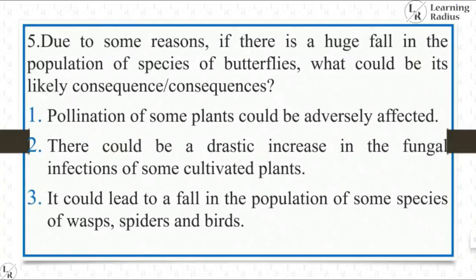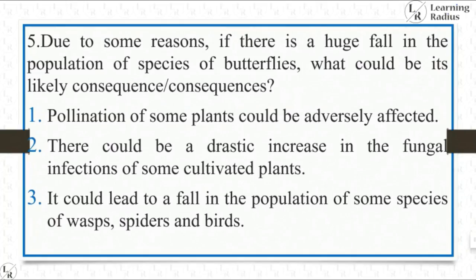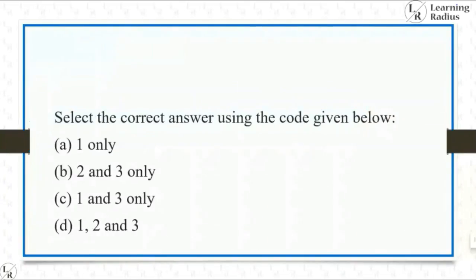Due to some reasons, if there is a huge fall in the population of species of butterflies, what could be its likely consequence? Statement 1: Pollination of some plants could be adversely affected — absolutely right. Statement 2: There could be a drastic increase in the fungal infection of some cultivated plants — that is wrong. Statement 3: It could lead to a fall in the population of some species of wasps, spiders and birds — again right. So the first and third statements are right and the second is wrong. The answer is one and three.